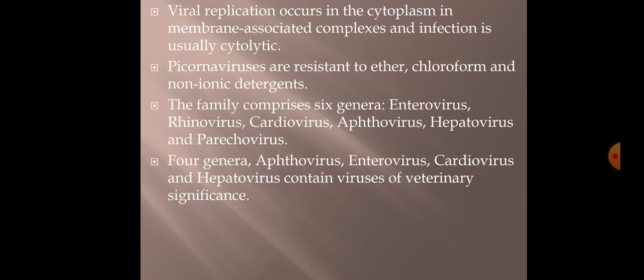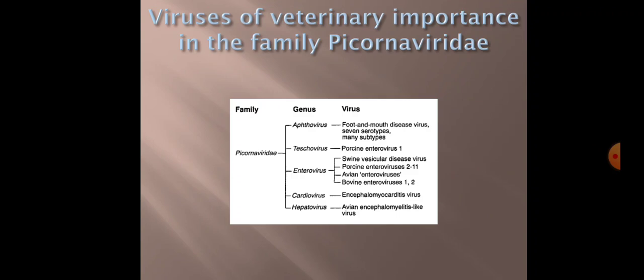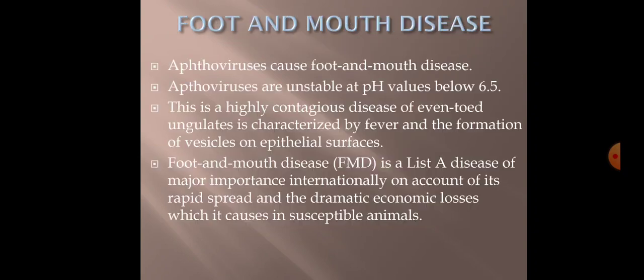The family comprises certain important genera, out of which Aphthovirus, Enterovirus, Cardiovirus, and Hepatovirus contain viruses of veterinary significance. Foot and mouth disease is caused by Aphthovirus. Aphthoviruses are unstable at pH below 6.5. FMD is a highly contagious disease of even-toed ungulates, with main characteristic features being fever and formation of vesicles on all epithelial surfaces.